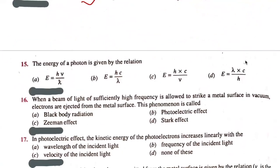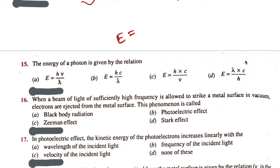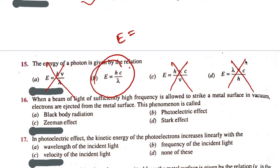The energy of a photon is given by the relation E equals hc by lambda. Option B — E equals hc by lambda — is the correct answer.